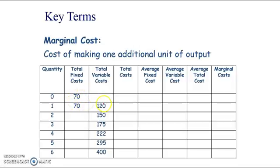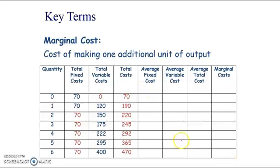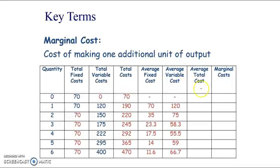The specification requires you to work with these numbers, so let's fill in a table. Total fixed costs are 70 all the way along since they don't vary with output. If you make nothing, variable costs are zero. Total costs equals total fixed costs plus total variable costs. Average fixed costs equals total fixed costs divided by quantity — you can't divide by zero, hence the dash. Average variable costs equals total variable costs divided by quantity. Average total cost can be found by adding average fixed and average variable costs, or by dividing total cost by quantity.